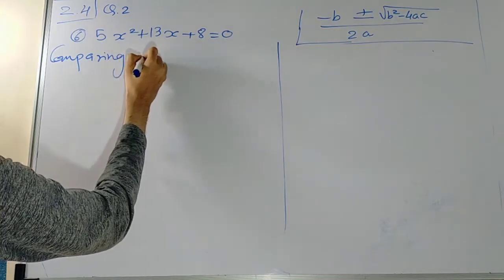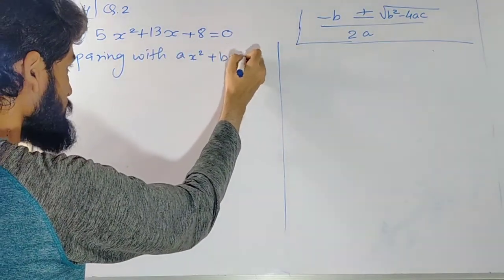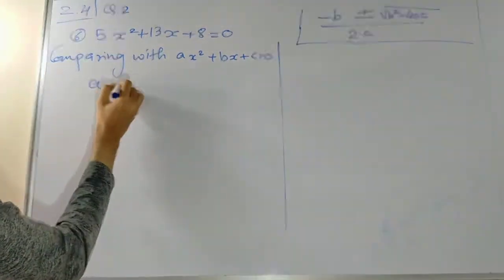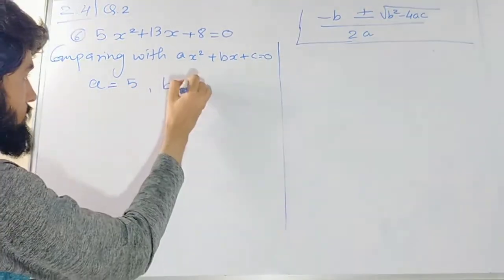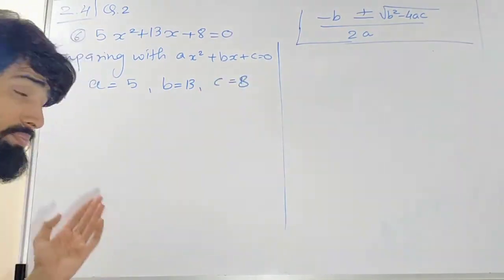Comparing with ax² plus bx plus c is equal to 0, the value of a is 5, the value of b is 13, the value of c is 8. ABC got it.